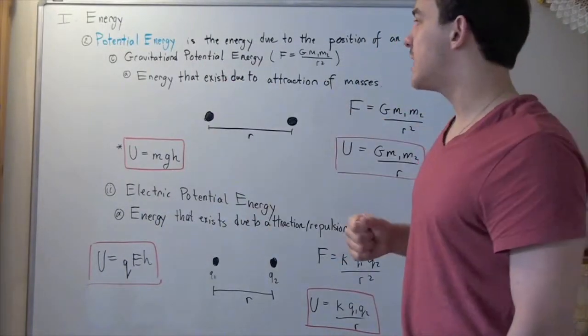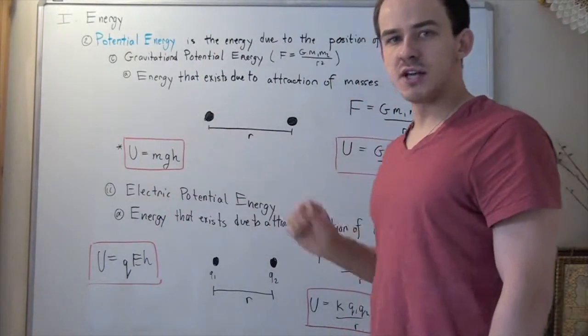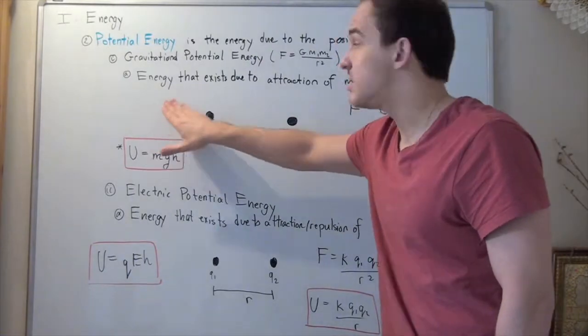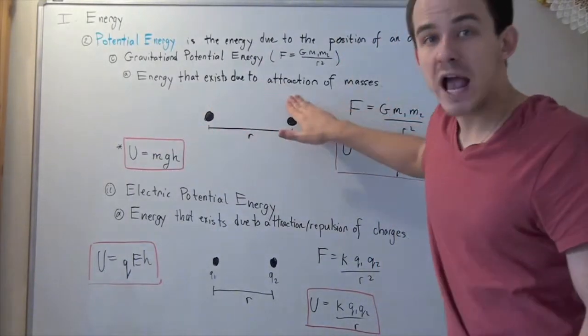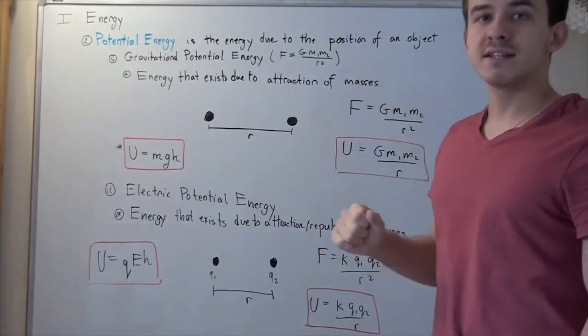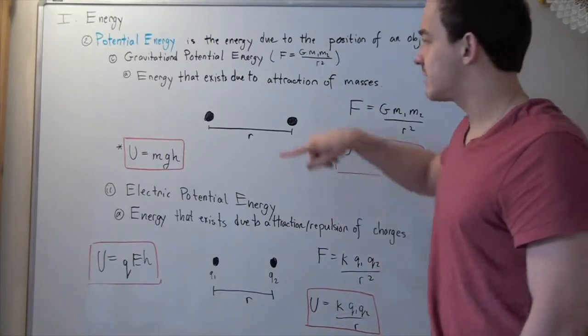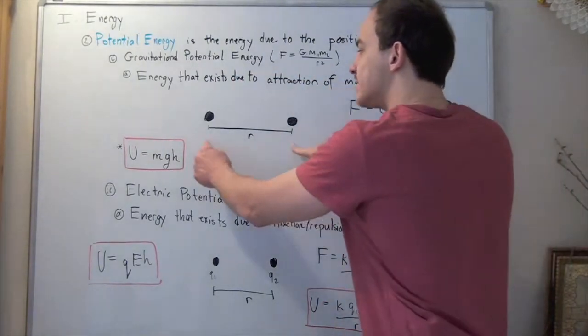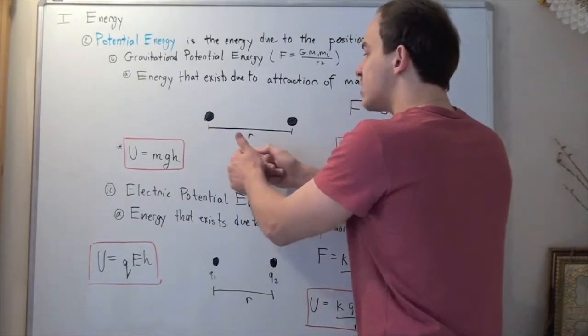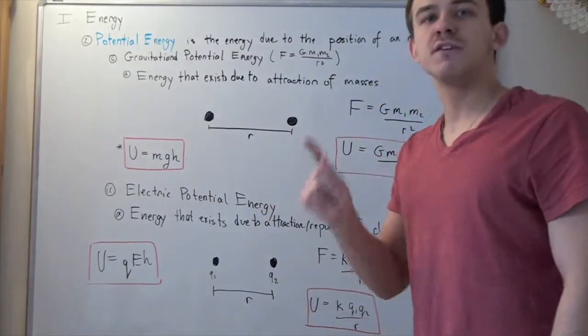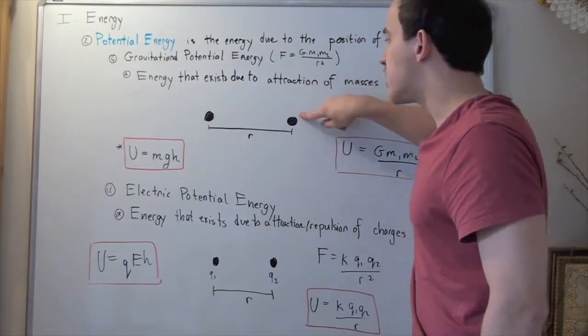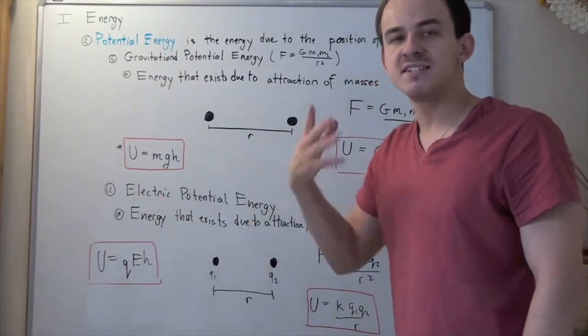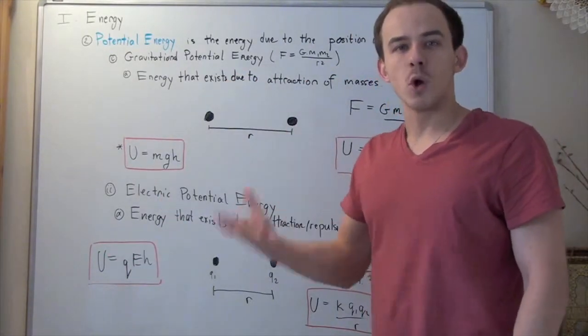So, let's begin with the gravitational. Gravitational potential energy is simply the energy that exists due to attraction of two or more masses. So, suppose I have two masses, mass one and mass two, and the distance between their center of masses is R. If I want to find the force that each object exerts on the other object, I simply use the universal law of gravitation.